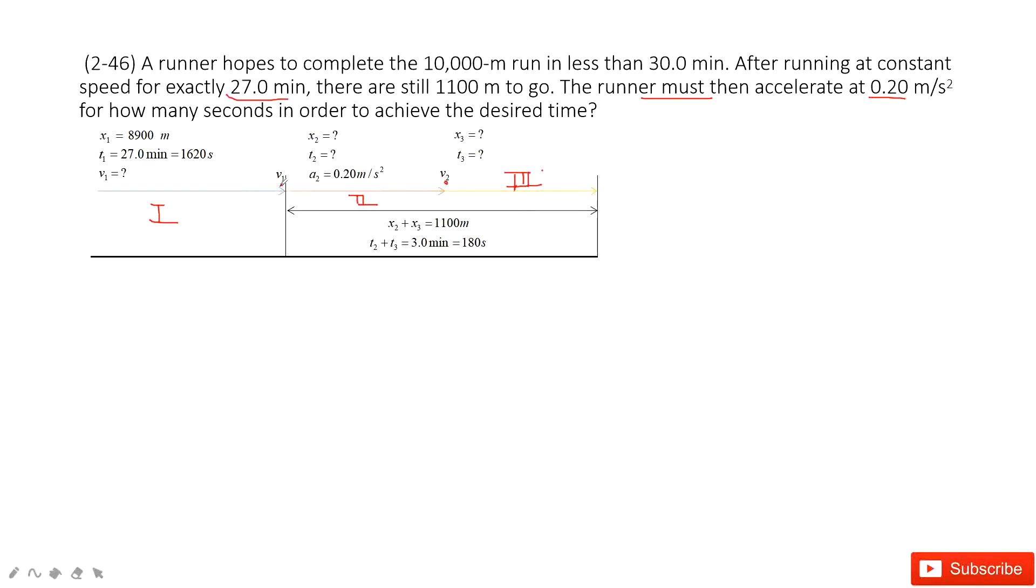Constant velocity with v2. We don't know the displacement moved in part 3 and the time taken. But we know the total displacement in part 2 and part 3 is 1,100 meters, and the time taken for t2 and t3 is just 3 minutes, that is 180 seconds.